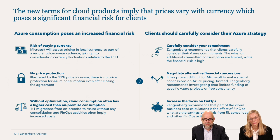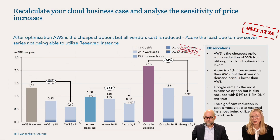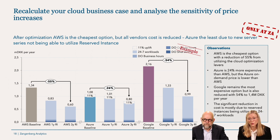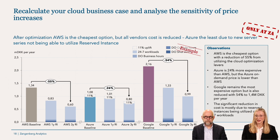There are new cloud product terms that pose significant risk — you need to take them into account when defining your strategy and when negotiating. Recalculate the business case and analyze the sensitivity of Microsoft's announced price increases. These examples compare Azure to AWS and Google, where the Azure baseline or business case actually ends up higher than AWS on a three-year basis — even though the AWS baseline is more expensive upfront, it becomes more competitive over three years. Remember to optimize and define clear business cases with alternative paths for your negotiation.